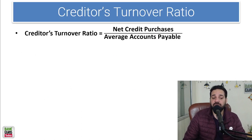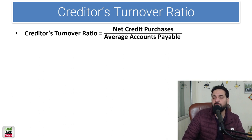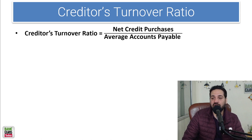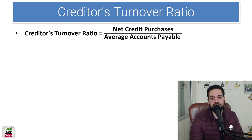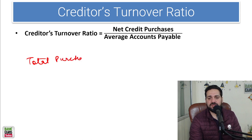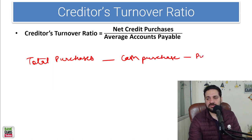Credit turnover ratio, similar to the debtor turnover ratio, is net credit purchases divided by average accounts payable. Net credit purchases equals total purchases minus cash purchases minus purchase returns — that is the net credit purchases.